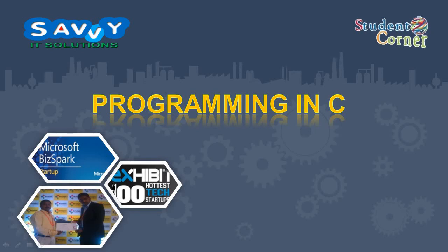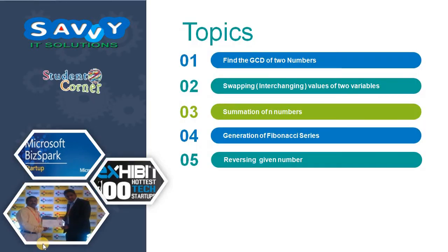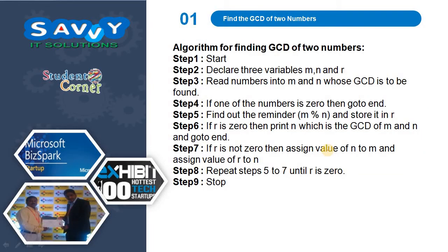Welcome to SaviIT Solutions. Now we are making a video on programming in C. We already discussed about algorithms. Today we need to learn a few examples for algorithms and how to write an algorithm. First, find the GCD of two numbers. Swapping values of two variables. Summation of n numbers. Generation of Fibonacci series. And reversing a given number.